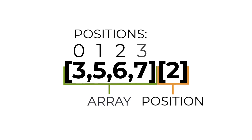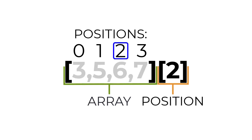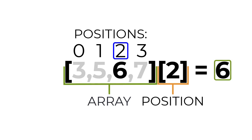So in this case, 3 is the first number in the 0 position, 5 is the second in the 1 position, and so forth. This sample expression is indicating 2 as the position, which would be the third entry in the array, evaluating to 6.